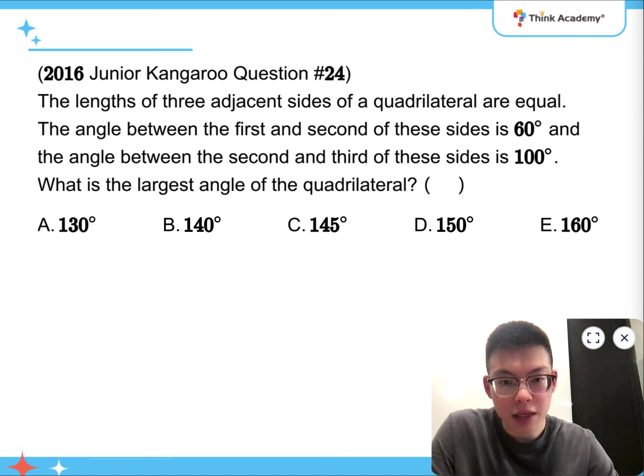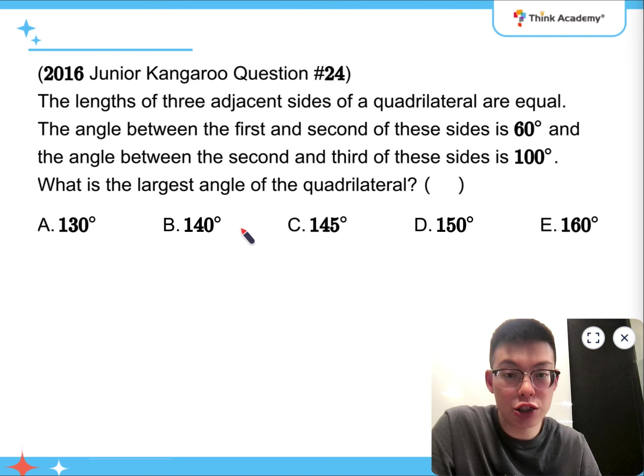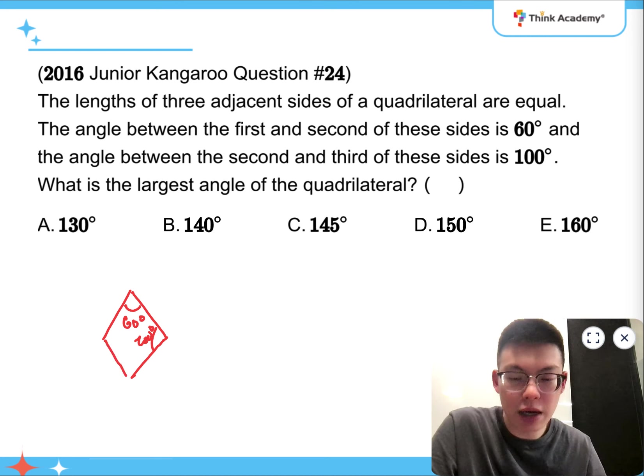And then, for question 24, the lengths of three adjacent sides of a quadrilateral are equal. The angle between the first and the second side is 60 degrees, and the angle between the second and the third side is 100 degrees. What is the largest angle of the quadrilateral? So, it means that the first and the second one goes with 60 degrees. The second and the third one goes with 100 degrees. So, how would you find the last one remaining, if this is also equal?